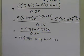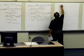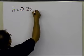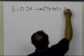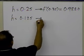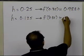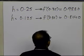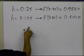I have now calculated the approximate first derivative using two different values of h with the central divided difference scheme. When h = 0.25, f'(0.35) ≈ 0.9880. When h = 0.125, f'(0.35) ≈ 0.8040. Now, how can we use these two values to get a better estimate?